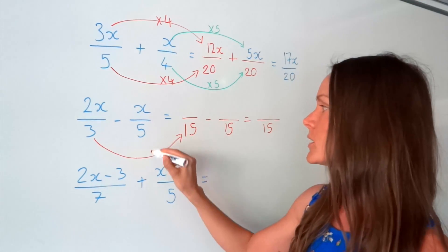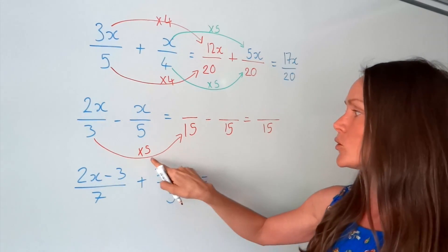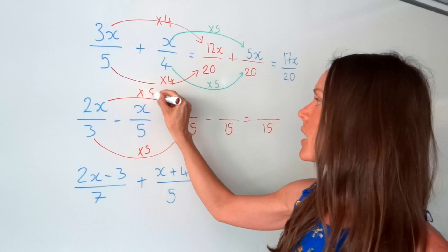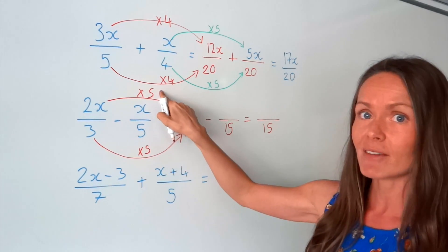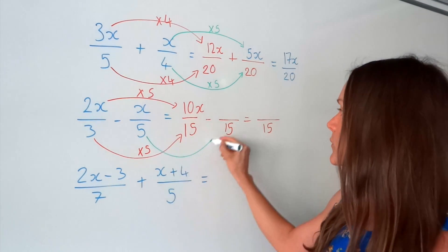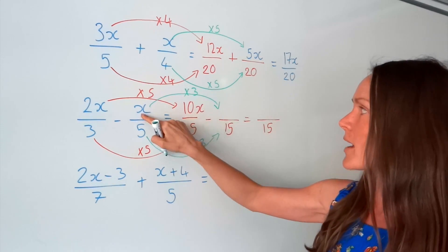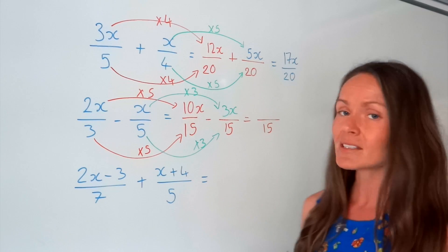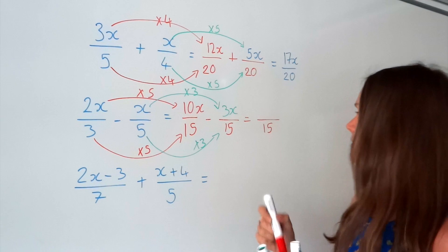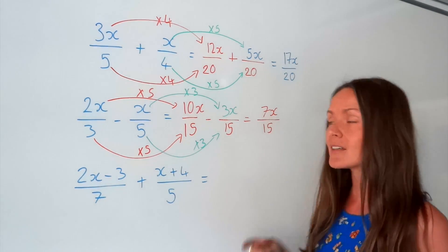Now we need to find the equivalent fractions — you can't just go changing 3 to 15, you have to change the numerator as well. To get from 3 to 15, I have to multiply by 5, so I do the same with that numerator — 2x times 5 is 10x. And then for the second fraction, to get from 5 to 15, I times by 3, so x times 3 is 3x. Watch out this time because we're subtracting. So 10x take away 3x leaves me with 7x. I can't simplify this answer because there isn't a common factor in 7 and 15.